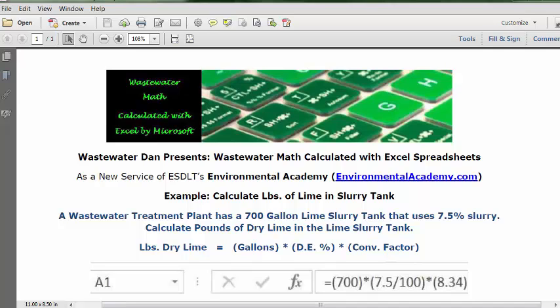Pounds equals gallons times the decimal equivalent of the percentage times the conversion factor from gallons to pounds.